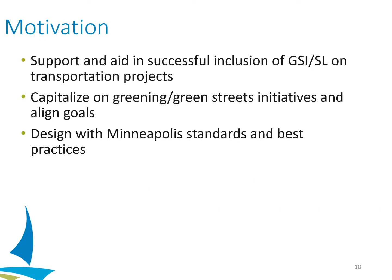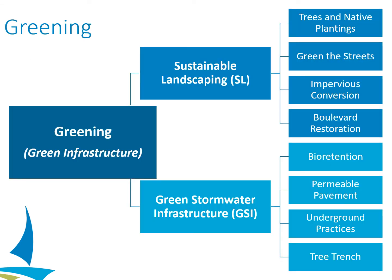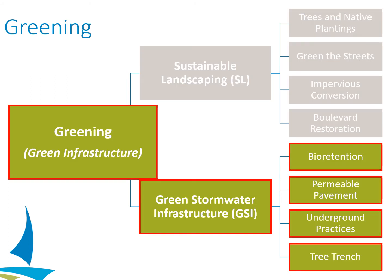The GSI section in the Street Design Guide is there to support successful design of GSI on our transportation projects. It's also to capitalize on other initiatives around greening spaces in the city and align those goals so we can maximize them, and to make sure that we're designing with Minneapolis's standards and best practices. In the Street Design Guide, we have a greening section that defines two components of greening: sustainable landscaping — things like increasing pervious area, incorporating trees and native plantings, and boulevard restoration — and green stormwater infrastructure or GSI, which includes bioretention, permeable pavement, and tree trenches. For the Street Design Guide, we'll focus just on the GSI section.